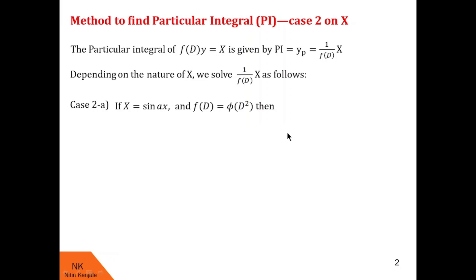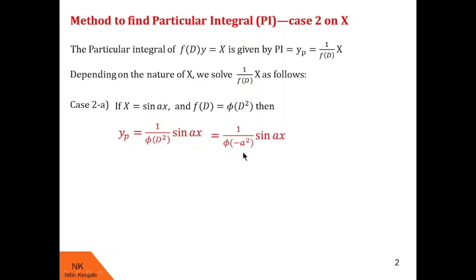The corresponding particular integral, that is 1/f(d) of X, can be written as 1/φ(d²) of sin ax. To obtain the value of 1/φ(d²) of sin ax, we simply have to replace every d² in this expression by minus a², keeping sin ax as it is. Note that the minus is given to a², it is not minus a, so the minus sign will be there after squaring the term a.